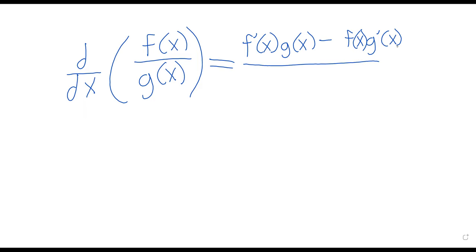A minus b and b minus a are different things, so it's important to get this order down: the derivative of the top, then the derivative of the bottom. And then in the bottom of the fraction there are no derivatives, but the denominator is suddenly being squared. I don't have anything brilliant to say about this — you've just got to do examples until it's fixed into your memory.